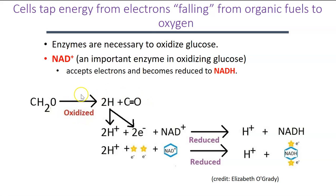There are a number of different enzymes important in helping us oxidize glucose. Enzymes speed up chemical reactions by lowering the activation energy needed. One important enzyme is also an electron carrier — NAD+. NAD+ accepts electrons and is reduced to NADH. In its NADH form, it carries those high energy electrons to where in the cell we make large quantities of ATP — for eukaryotic cells, that location is in the mitochondria.